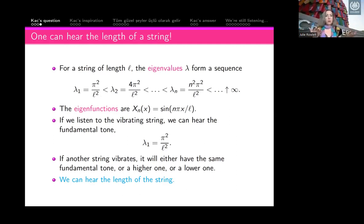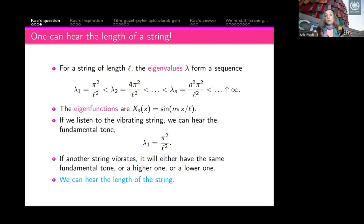These numbers basically determine the sound of the string, so anything determined by the spectrum can be heard. The eigenvalues are square integer multiples of pi squared divided by the length squared, and the corresponding eigenfunctions are sines. If we know these eigenvalues, we know the length. Short strings give higher tones, long strings give lower tones. So you can hear the length of a string, and you can do it just using calculus.